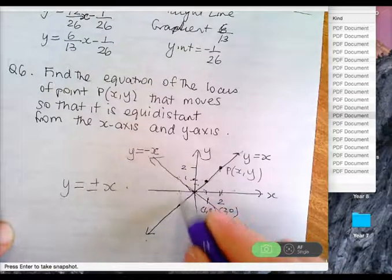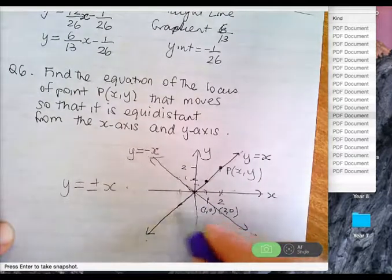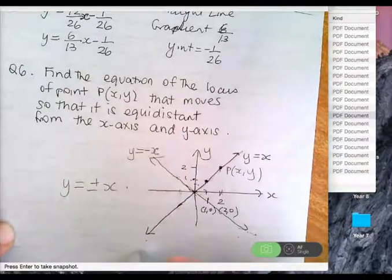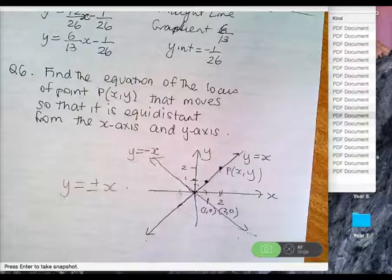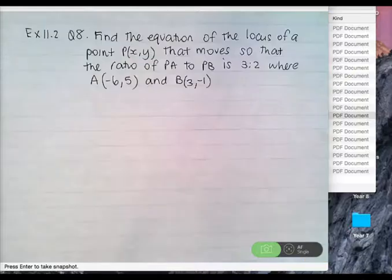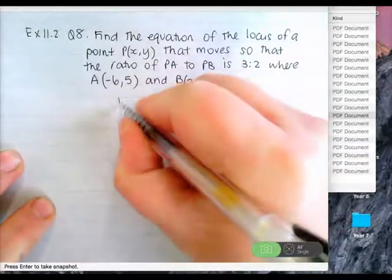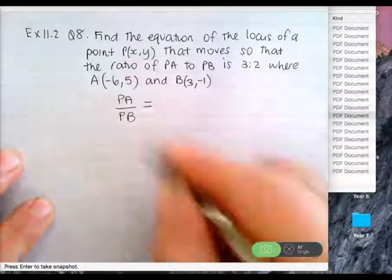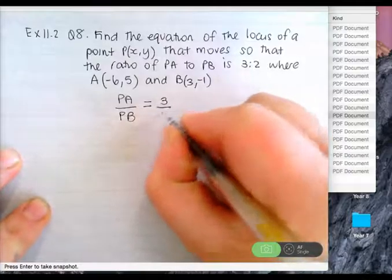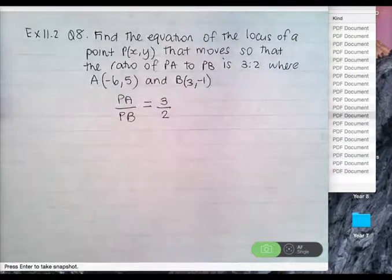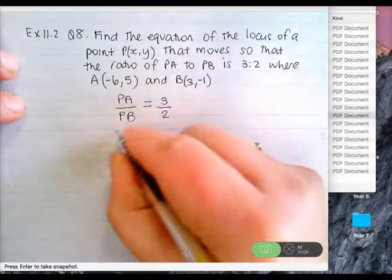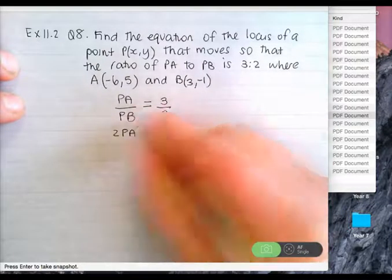Exercise 11.2, question 8: find the equation of the locus of a point P(X, Y) that moves so that the ratio of PA to PB is 3 to 2. I want it written as a fraction: PA over PB equals 3 over 2. Cross multiply: 2 times PA equals 3 times PB. These are distances. We're going to square both sides: 4 PA squared equals 9 PB squared. Make sure you square the numbers.